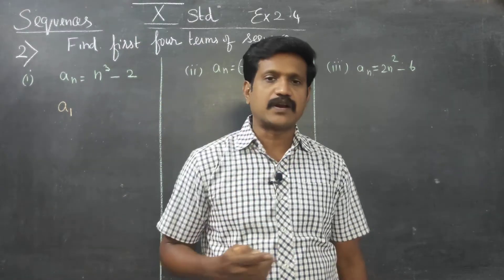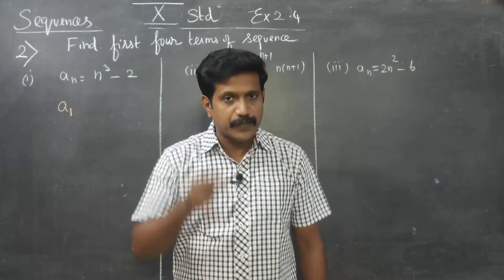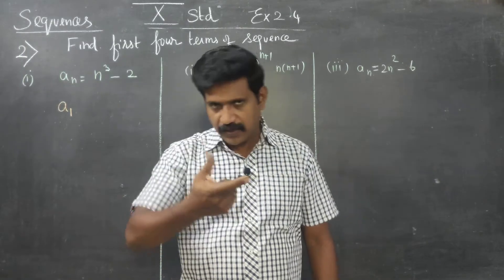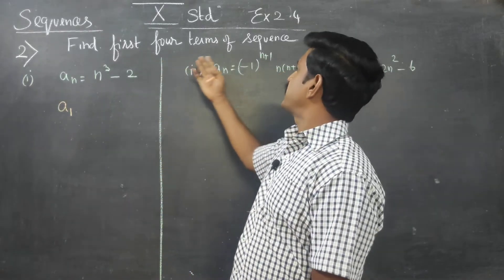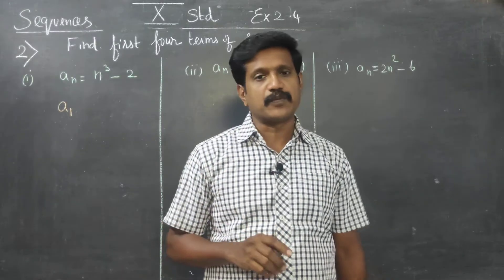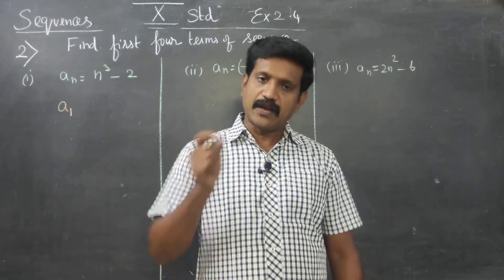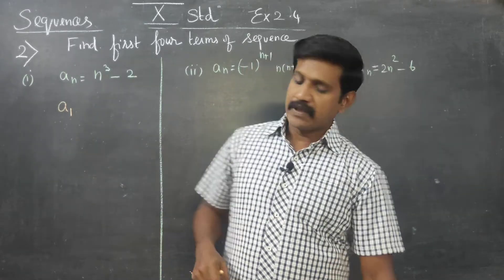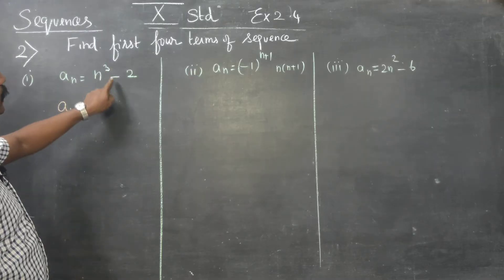We need to find four terms for the first sum. First of all A1, second of all A2, third of all A3, then A4. Now, aₙ is equal to n cube minus 2.